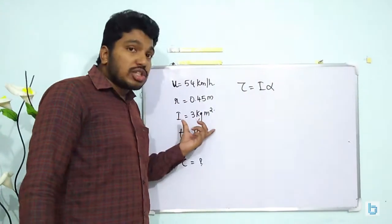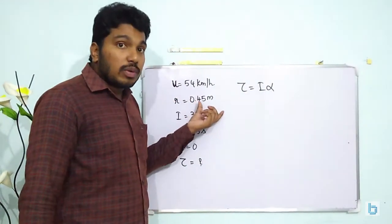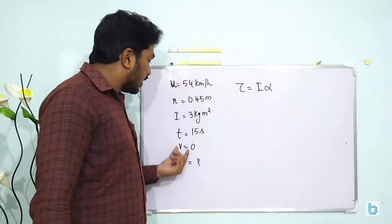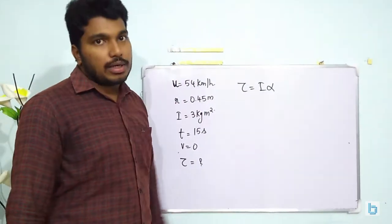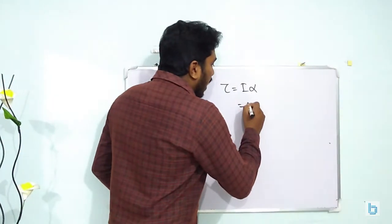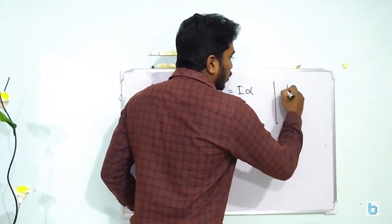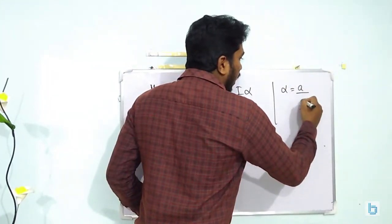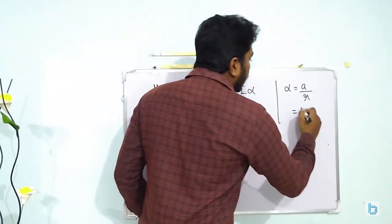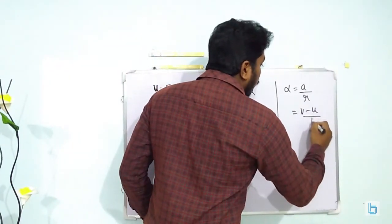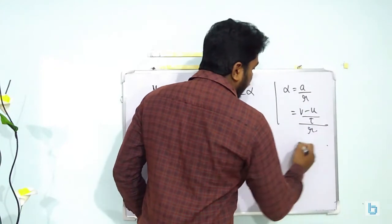So here moment of inertia is given to you, radius of the wheel is given, initial velocity, final velocity and time is given. We know that alpha is actually equal to acceleration by the radius. Right? Acceleration means there is change in velocity with respect to time by the radius.